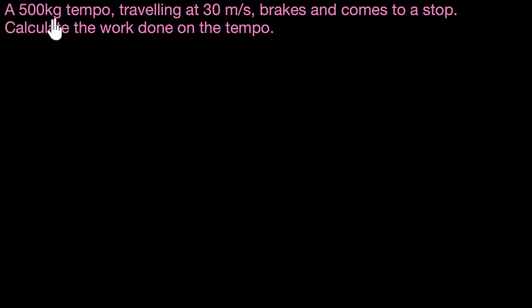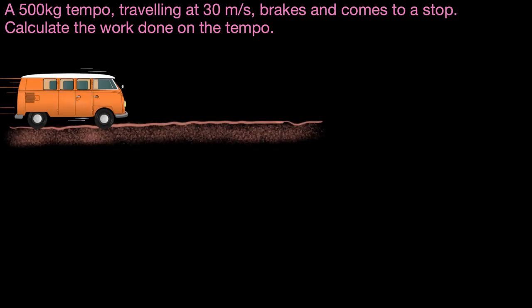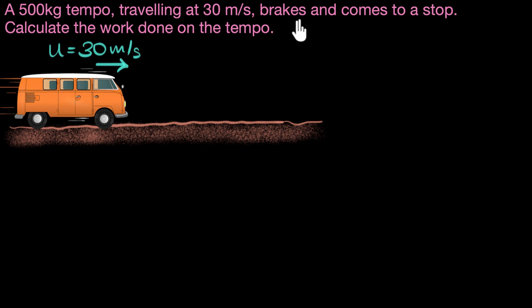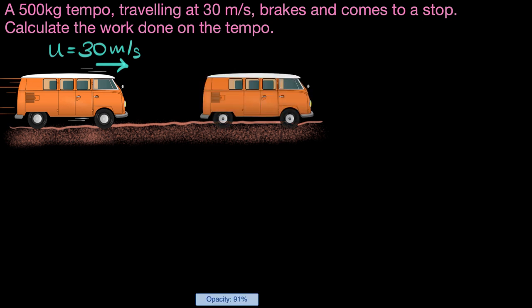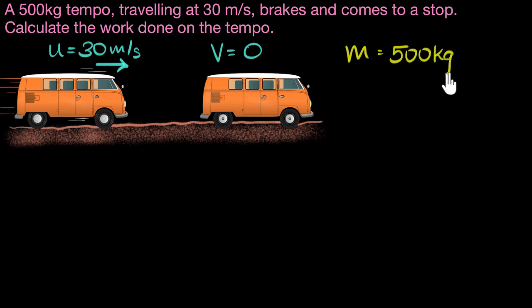A 500-kilogram tempo traveling at 30 meters per second brakes and comes to a stop. Calculate the work done on the tempo. The tempo is initially traveling at 30 meters per second — that's its initial velocity. It brakes and decelerates, so its final velocity is zero. The mass is given as 500 kilograms.